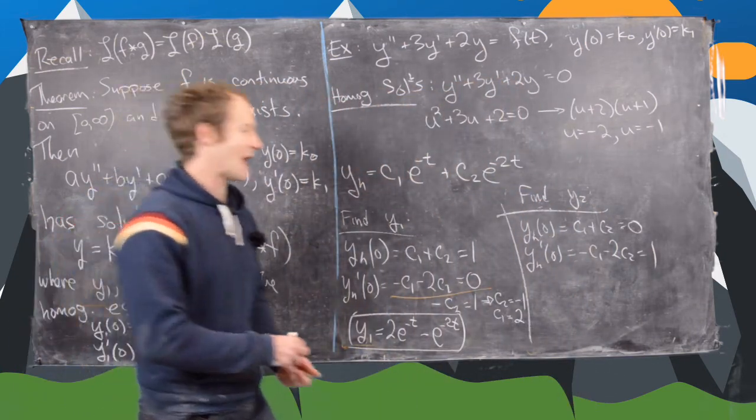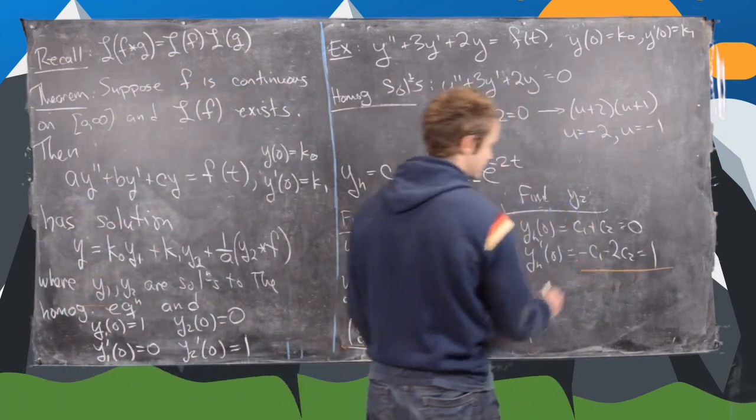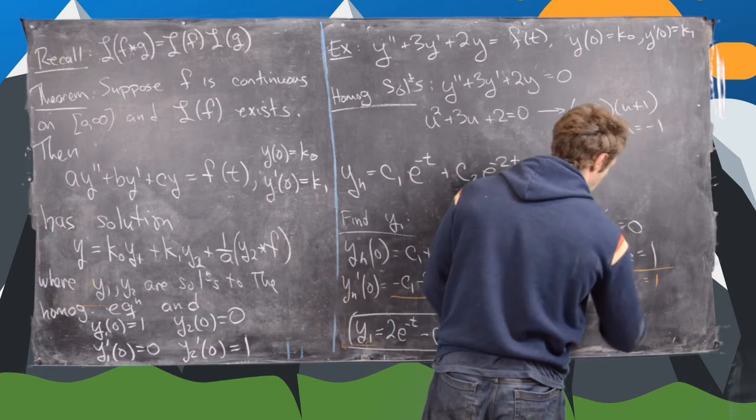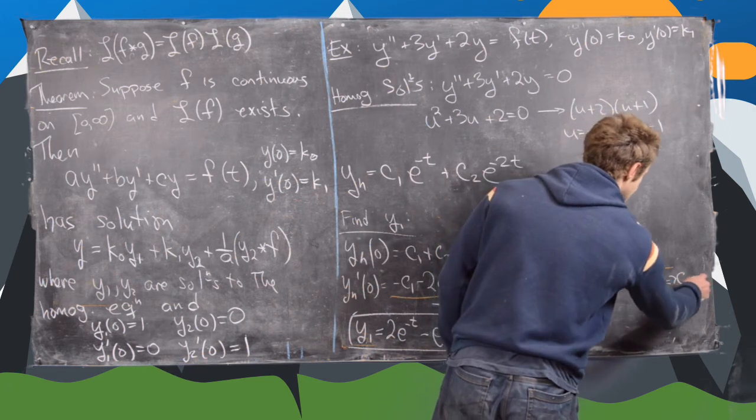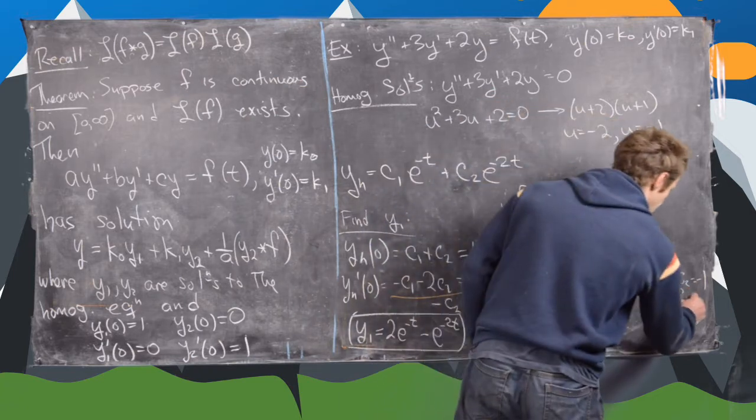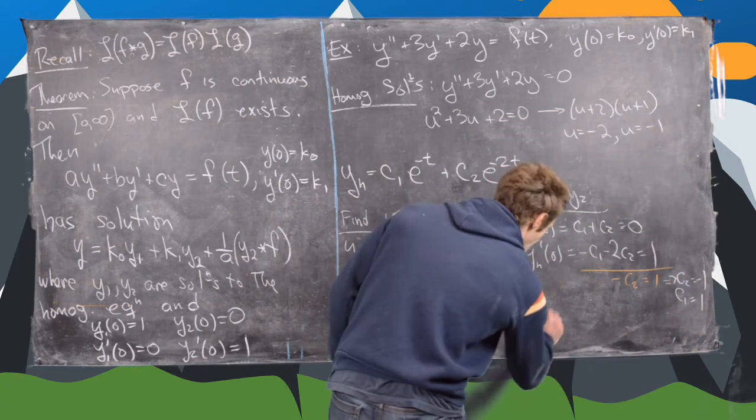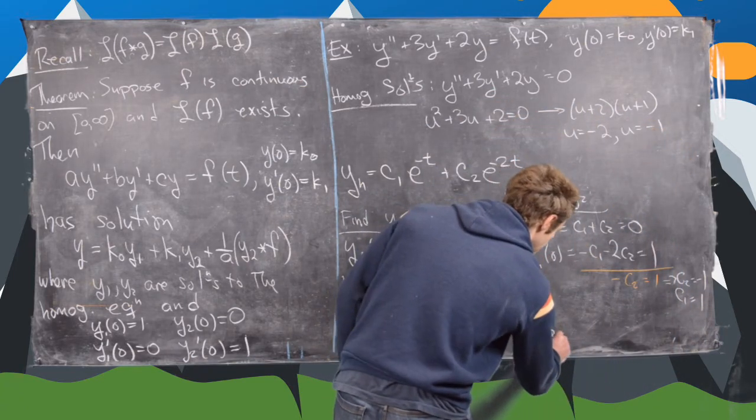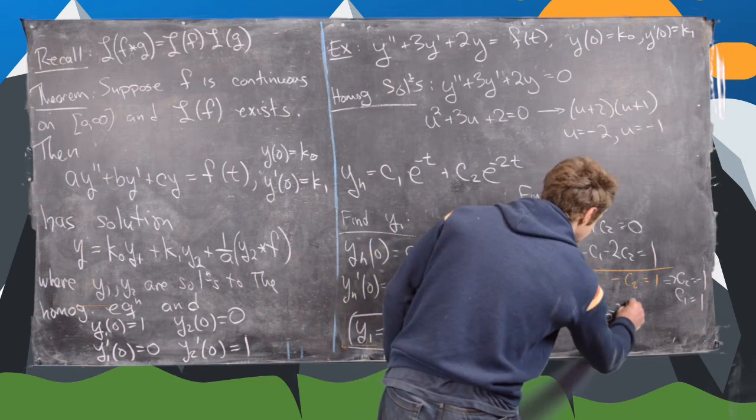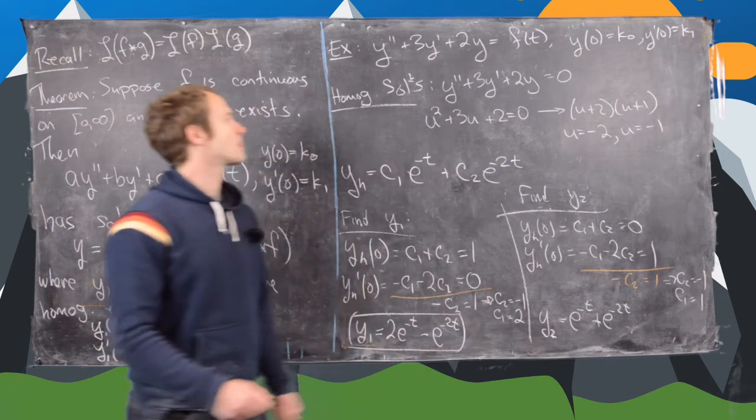Again, I'm going to add the equations. And that's going to give me minus c2 equals 1, which tells me that c2 equals negative 1, which tells me that c1 equals 1. Great. So I have y2, y2 equals e to the minus t plus e to the minus 2t. Okay. Great.